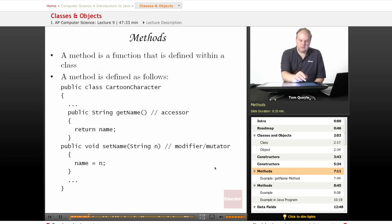A method is a function that's defined within a class, and a method is defined as follows. You have an access level which is either public or private, and we'll talk about that later in the lesson today. The return type is next. In this case, this method returns a string. And then the name of the method followed by any parameters that it takes in parentheses.